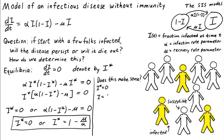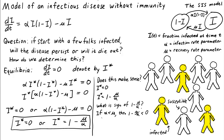How about the other equilibrium, 1 minus mu over alpha? First of all, any realistic equilibrium should be between zero and one, since i is supposed to be a fraction of the population. i* is clearly less than one, but is it positive? What is the sign of 1 minus mu over alpha? Obviously that depends on the values of mu and alpha. If alpha is less than mu, then mu over alpha is greater than one, so 1 minus mu over alpha is negative. In this case, the equilibrium i* equals 1 minus mu over alpha doesn't make sense.